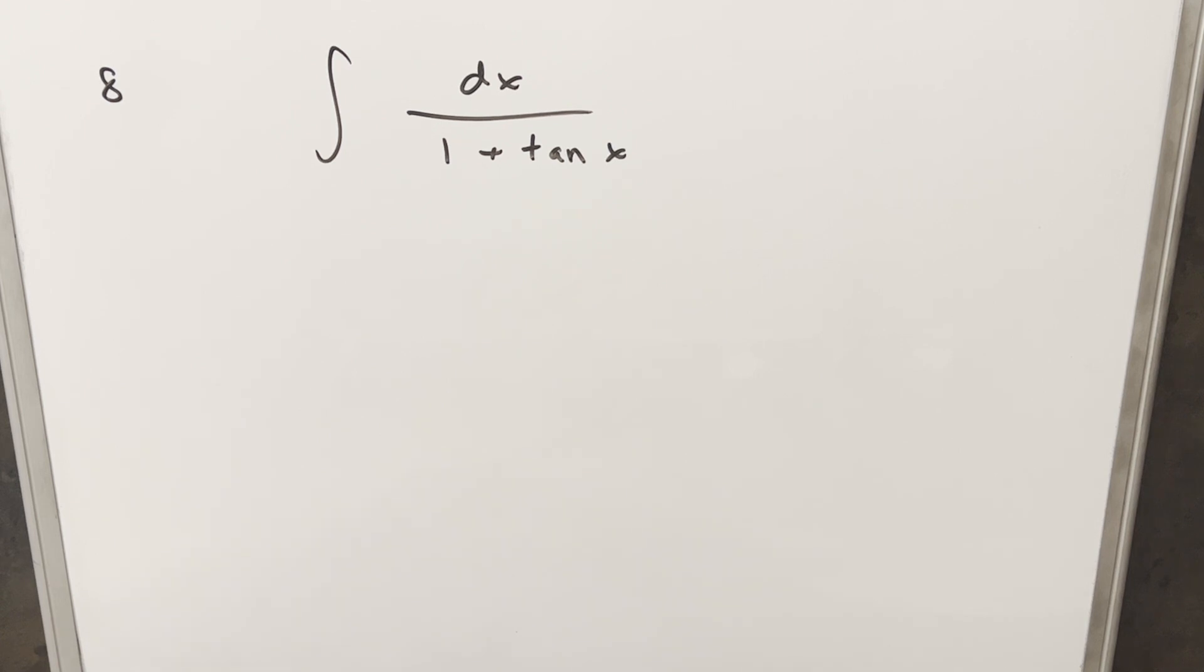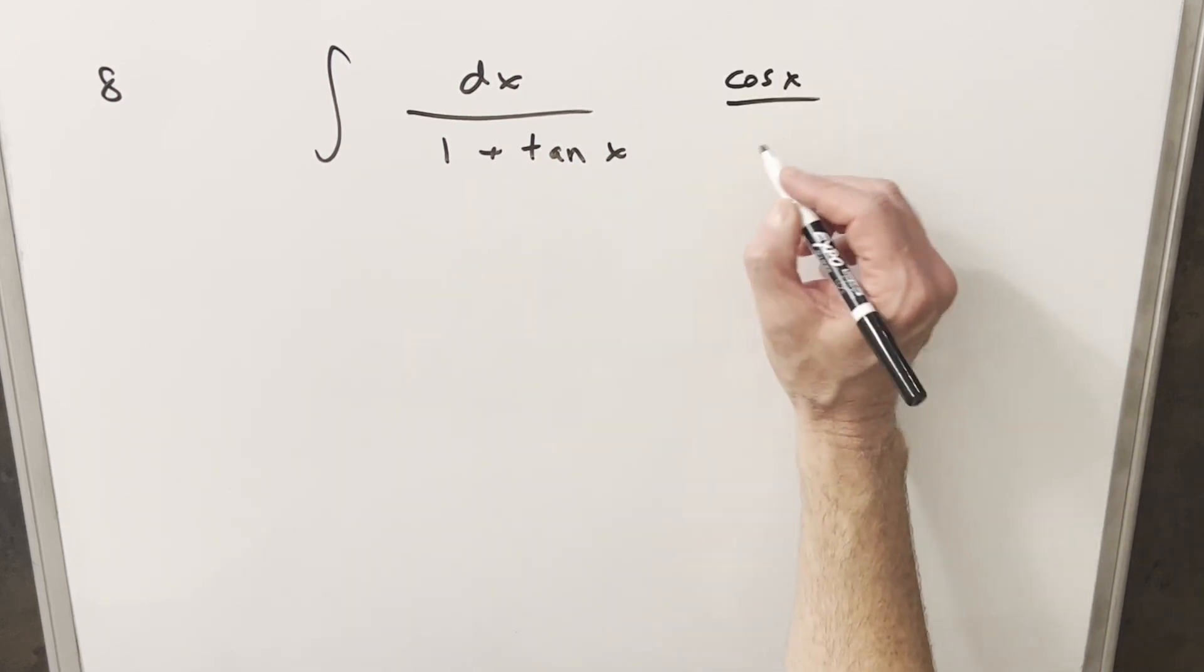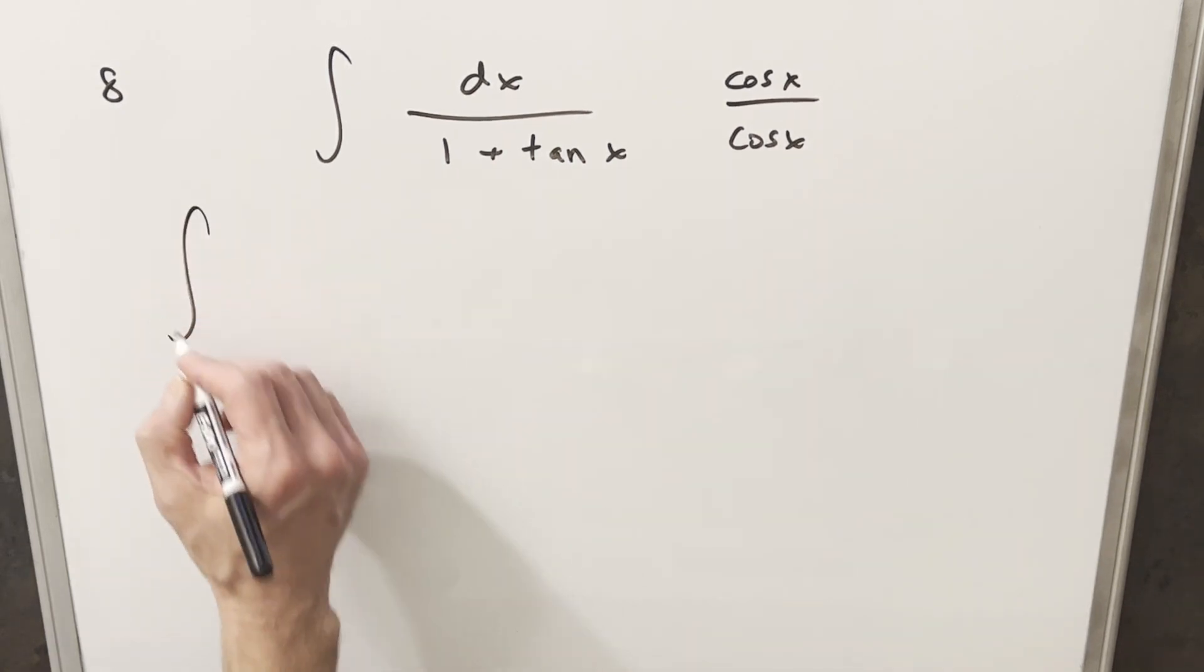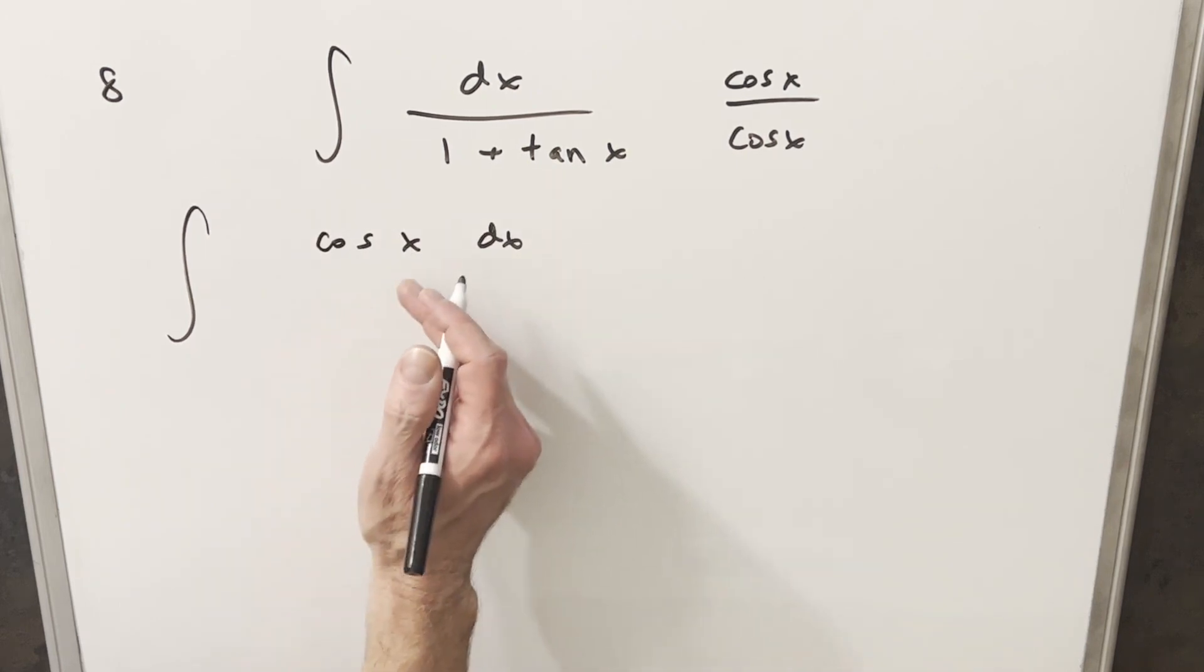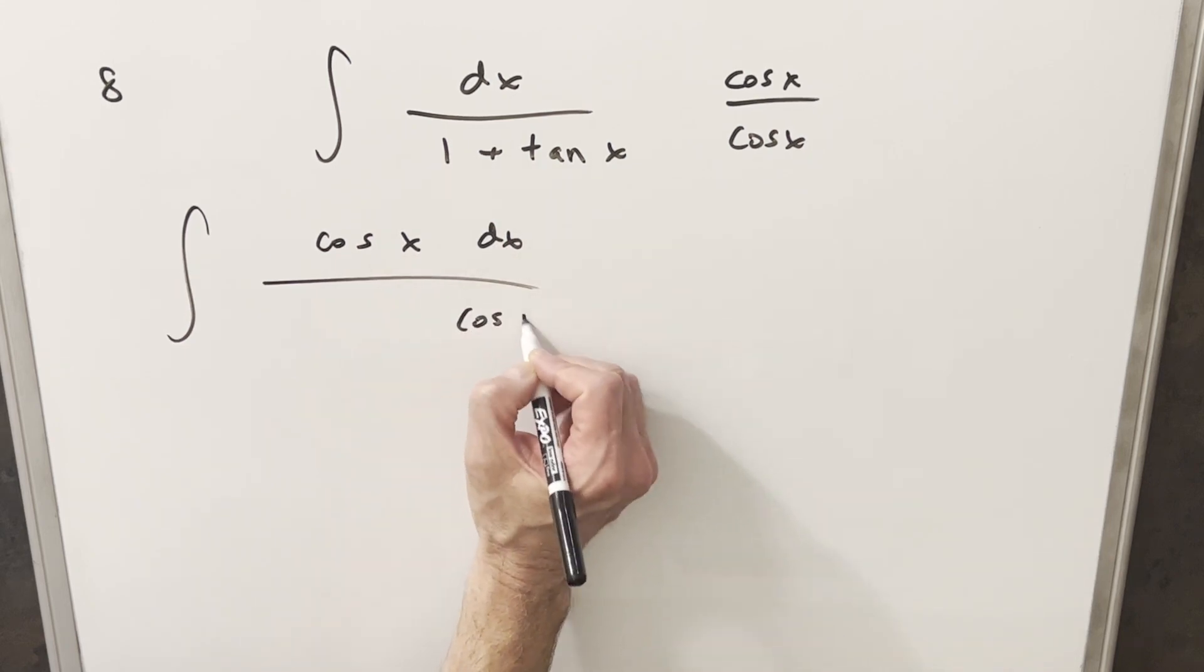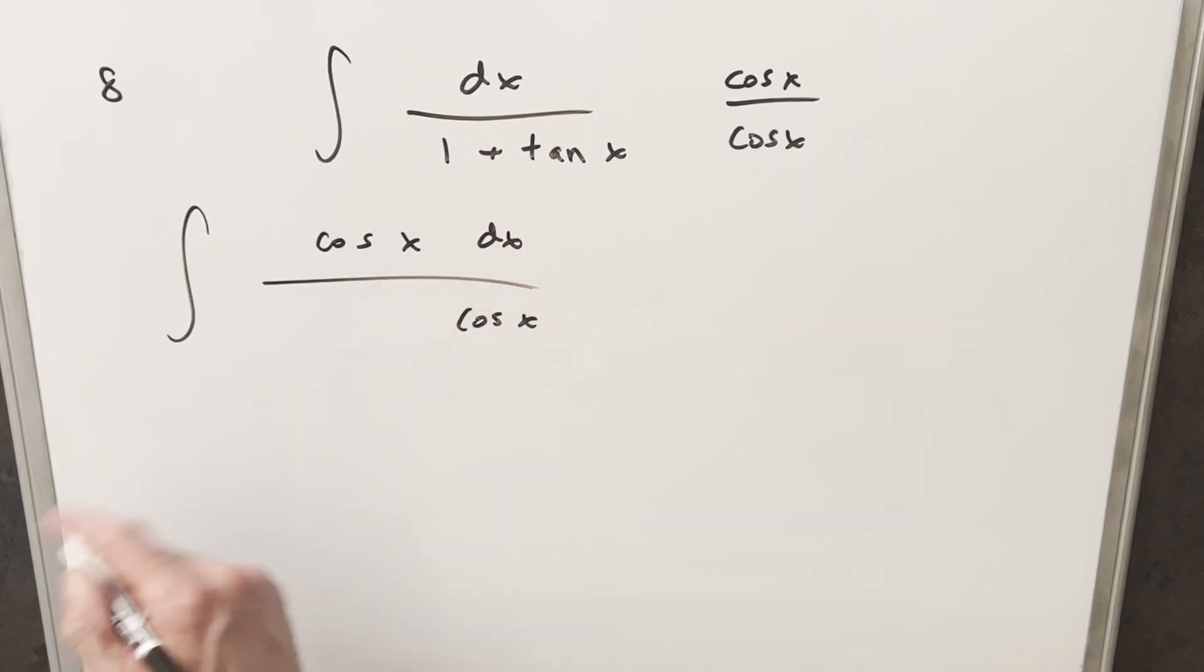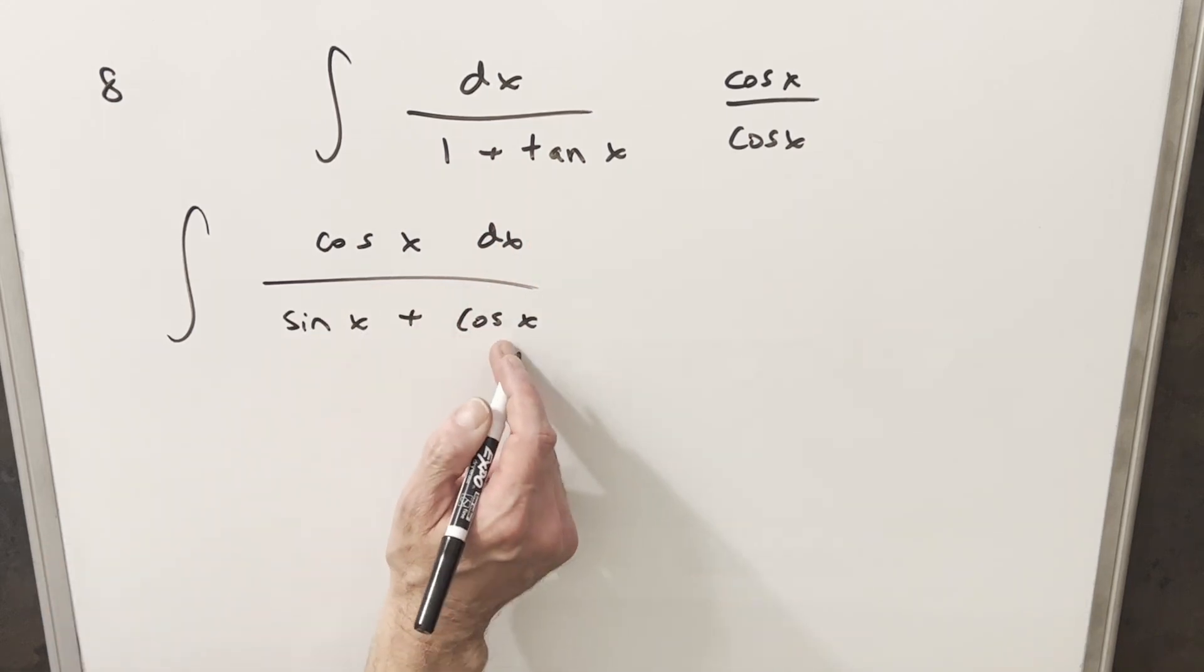I really just went for the first method I thought of and that was multiplying through by cosine x, just because it's a little hard to deal with 1 plus tan x in the denominator. So I'm going to multiply by cosine x because I want to transform this into sines and cosines. When we multiply that, we're going to have cosine x in the numerator, then cosine x times 1 gives me cosine x, and cosine x times tan x—seeing tan as sine over cosine—the cosines cancel, so this gives me sine x plus cosine x in the denominator.